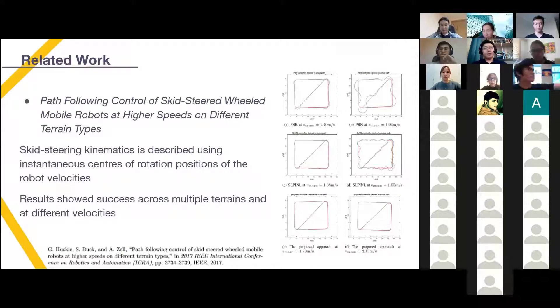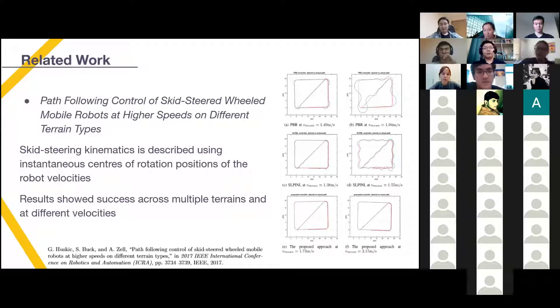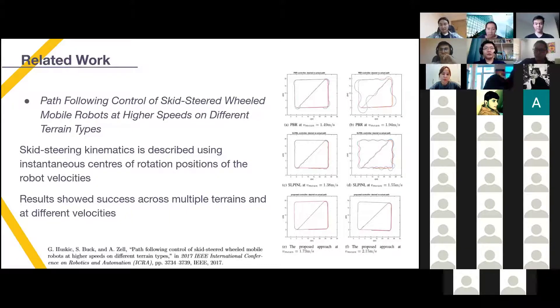Before we start describing our approach, we would like to highlight several works that were important for development of our project. Firstly, authors of the first mentioned work described the kinematic model of the skid steering mobile robot that was the base for the kinematic model used in our project. The unique model is that they proposed to use ICRs for velocity control. Their approach was very successful and the result can be seen on the figure. The performance was better than state-of-the-art at higher velocities and across different terrains.